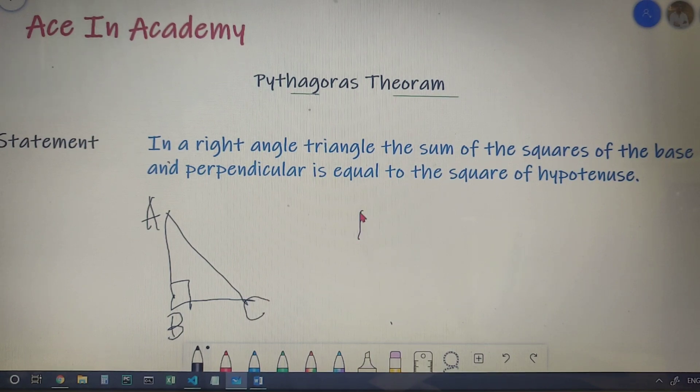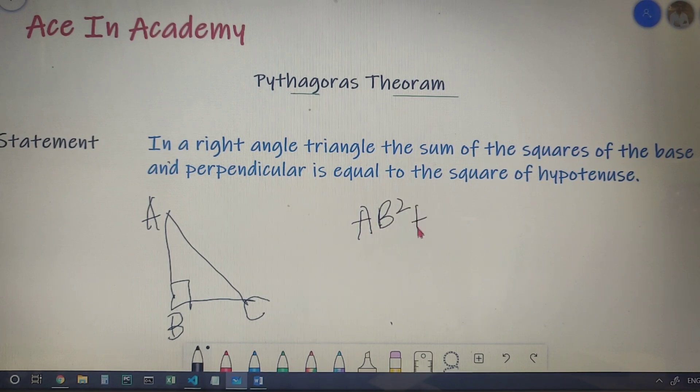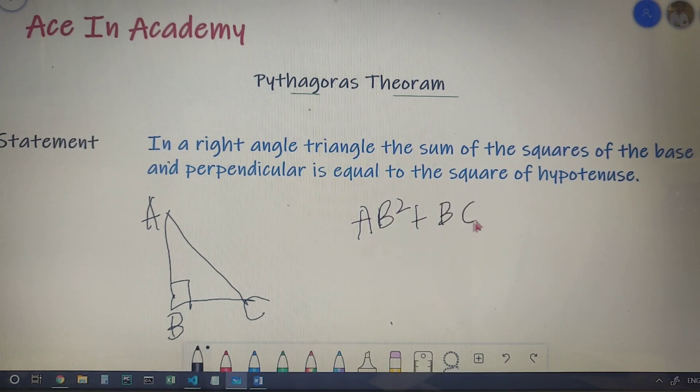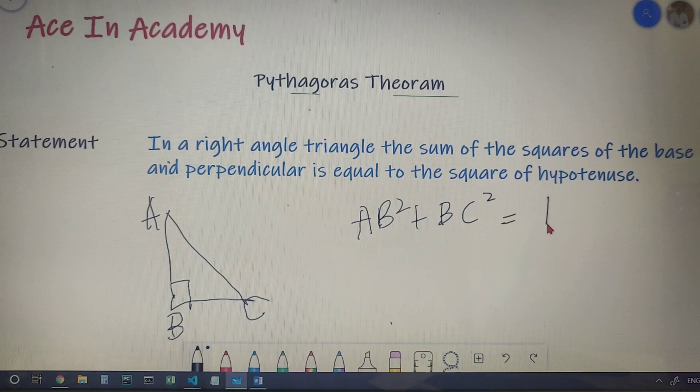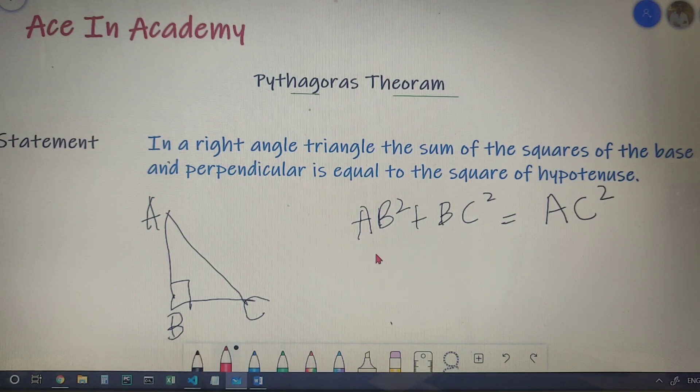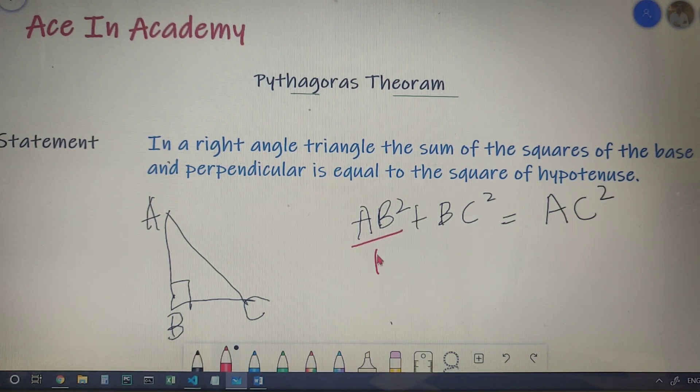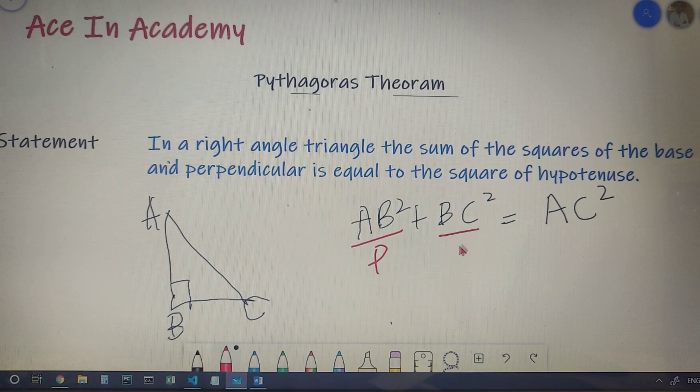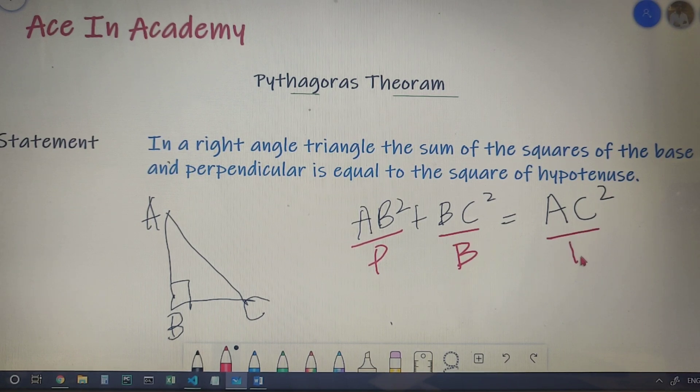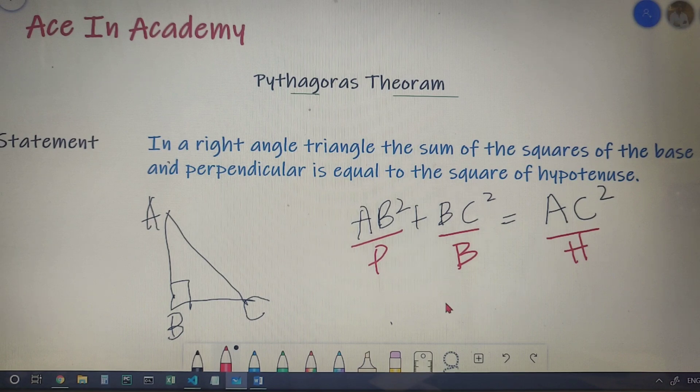Now over here, AB is the perpendicular, BC is the base, and AC is the hypotenuse. In any right-angled triangle, the longest side is always the hypotenuse.